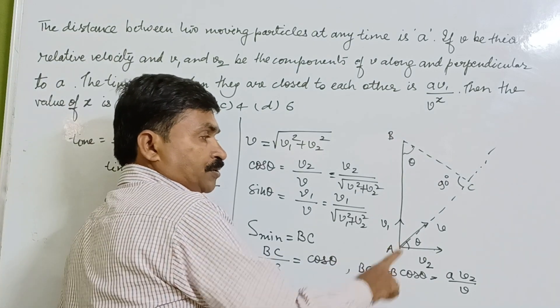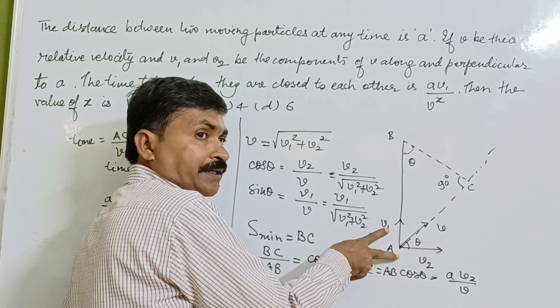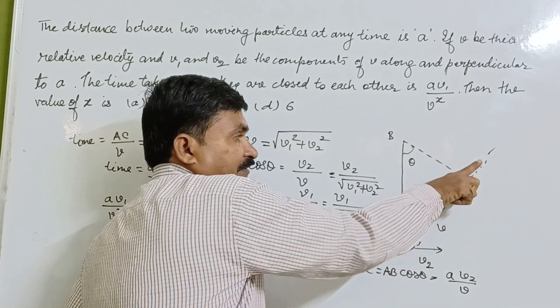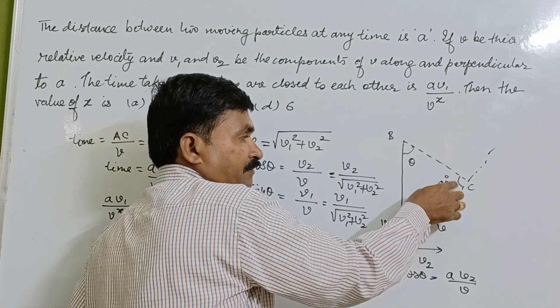Now, if we go through this diagram, V1 is the velocity, V2 is another velocity of two particles. Resultant velocity V, and they are making an angle with this at 90 degrees.